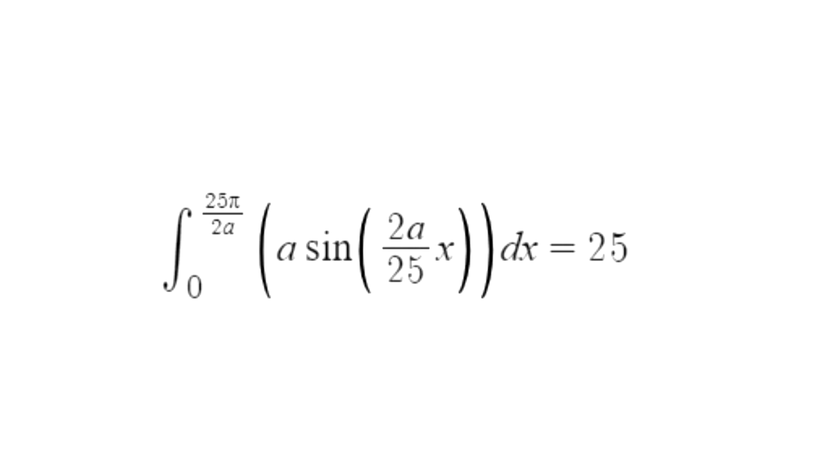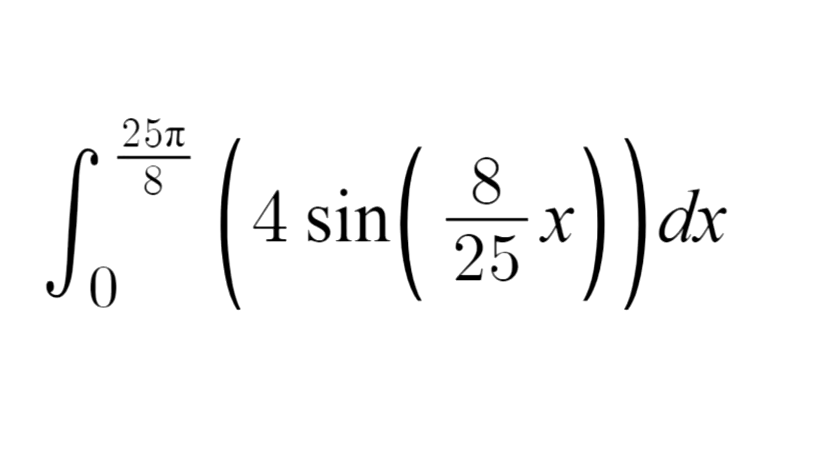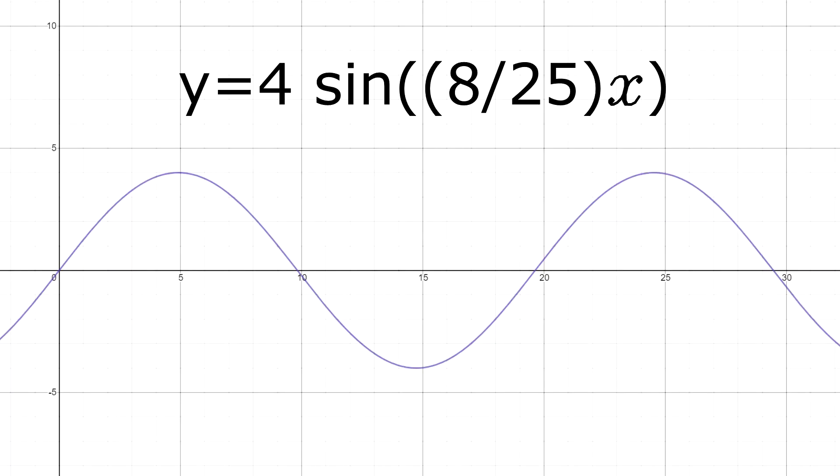Using this general formula, we can come up with a final answer. The integral from 0 to 25 pi over 8 of 4 sin the quantity 8 over 25x dx equals 25, meaning the equation is y equals 4 sin 8 over 25x. This equation is what the architect will use to model the openings of the tunnels.